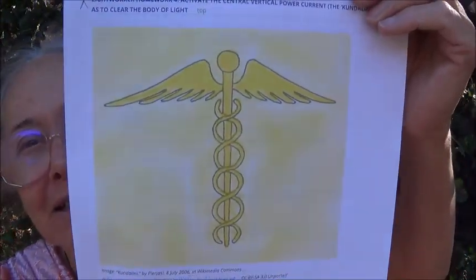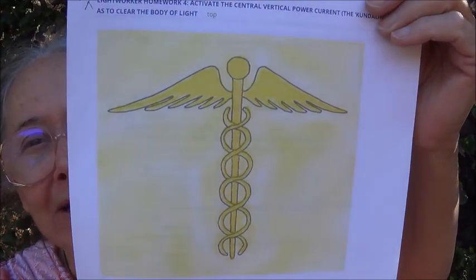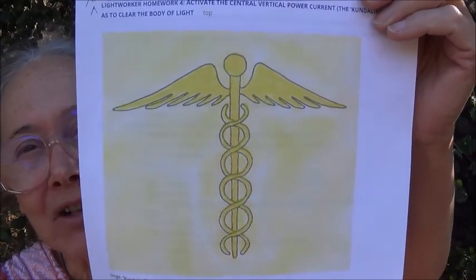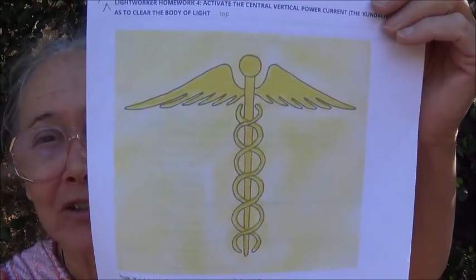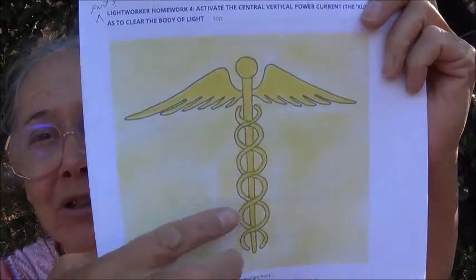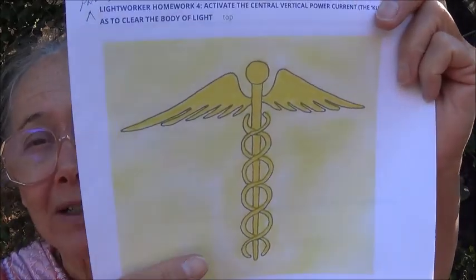Here it is — nice, beautiful golden yellow color. You can see the wings — how activation of the kundalini allows you to take flight and to find your angelic nature. You can see how it twines up the chakras and reaches its peak at the crown chakra. It's a very beautiful and expressive image. The legend for the image is 'Kundalini' by Pierre Jossi, spelled P-I-E-R-J-A-S-I, 8 July 2006, on Wikimedia Commons, Creative Commons license CC BY-SA 3.0 Unported.